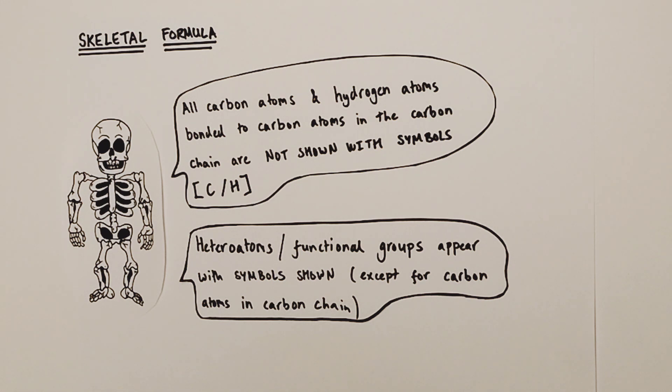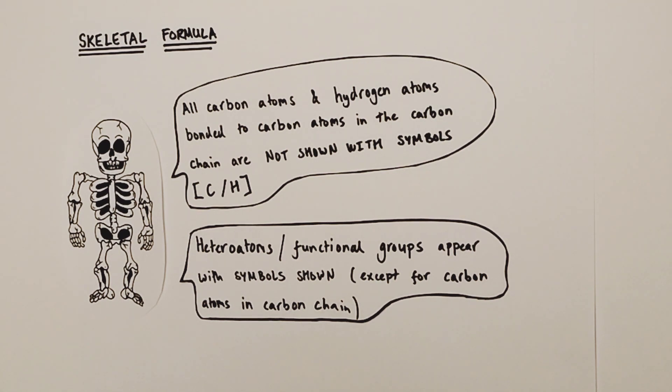The only exception being carbon atoms in the carbon chain that form part of a functional group. A carboxylic acid group has C double bond O and a single bond OH coming from the carbon. You wouldn't see the C for the carbon, but you would see the double bond O and the single bond OH for the rest of the carboxylic acid functional group.